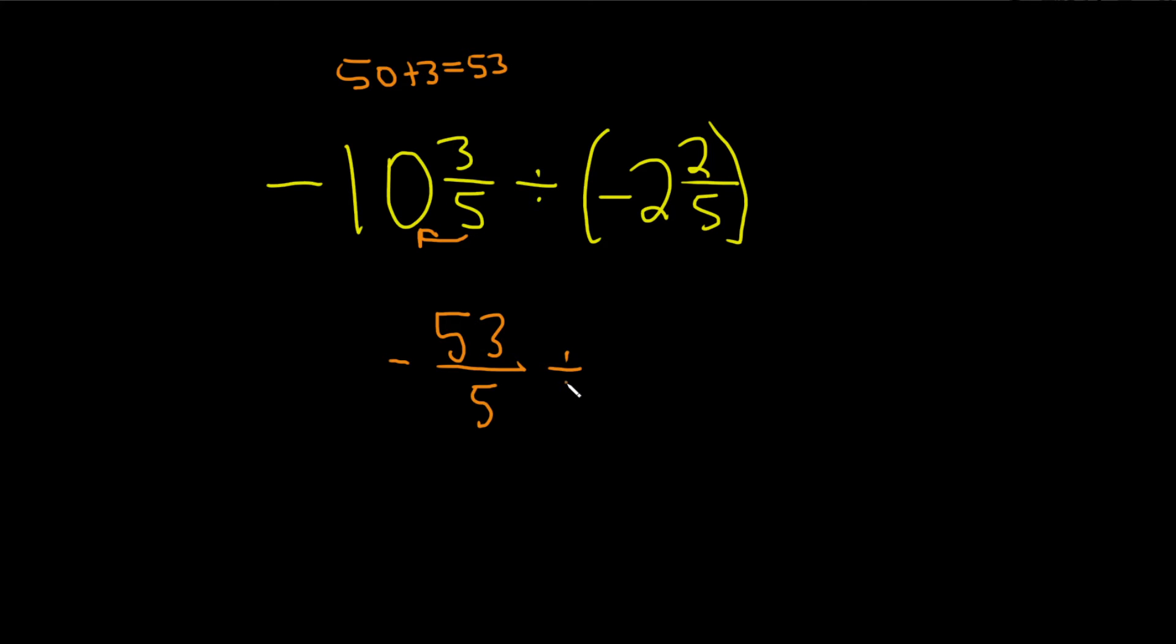Divided by—do the same thing here. 5 times 2 is 10, plus 2 equals 12. That number goes on top, the 5 goes on the bottom, and the negative just hangs out.